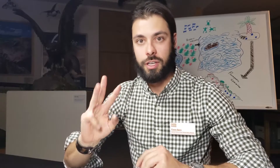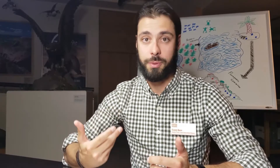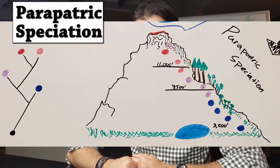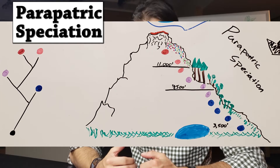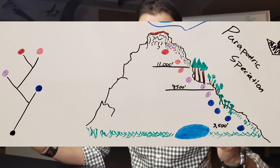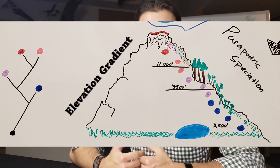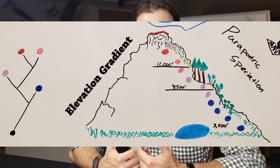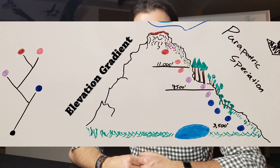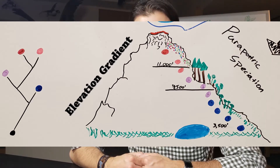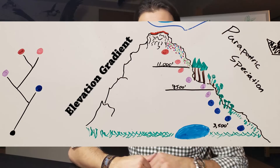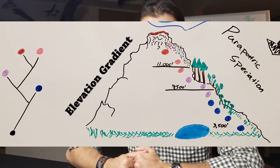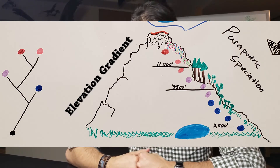The third concept I want to talk about is peripatric speciation. This is when you have diversification of an organism over a large geographic area. And while genetic exchange may occur between several subpopulations, it is less so among distant populations. Again, in all instances, diversification and niche specialization occurs over time.